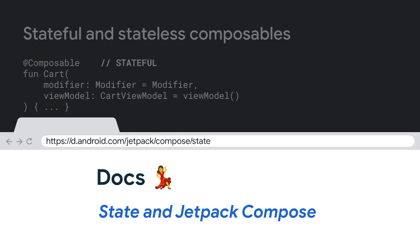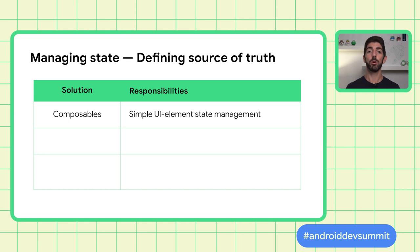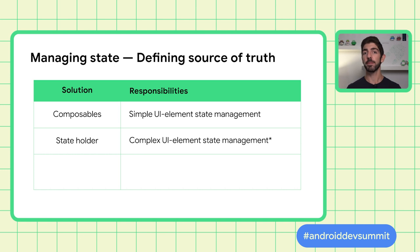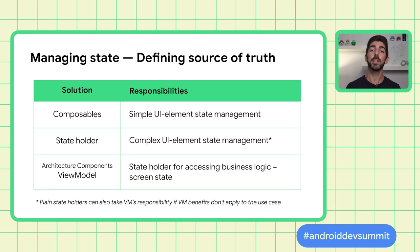To read more about state and state hoisting, check out the documentation. State should be hoisted to at least the lowest common ancestor, but should it always be in the composable itself? Let's examine the different ways to manage state: composables for simple UI element state management, state holders for complex UI element state management, and ViewModels as a special type of state holder that provides access to business logic and prepares application data for presentation.